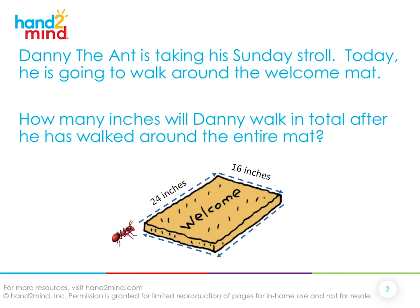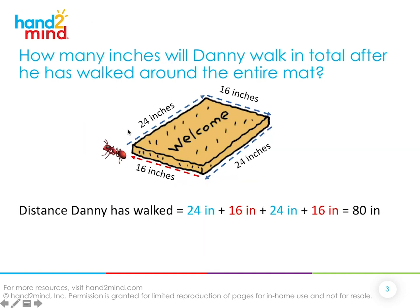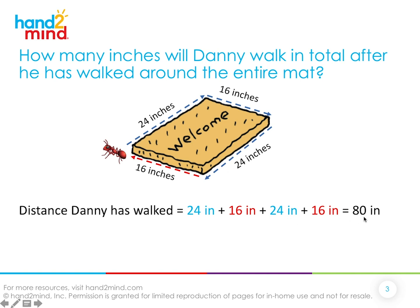Yesterday, we did a problem about Danny the Ant taking a Sunday stroll around a welcome mat. We wanted to know how far Danny had to walk to get around the mat. So we calculated 24 inches going the first leg, 16 inches going the second leg, 24 inches going back, and 16 inches in the fourth leg, which came together to be 80 inches. We found out that total distance was called the perimeter.